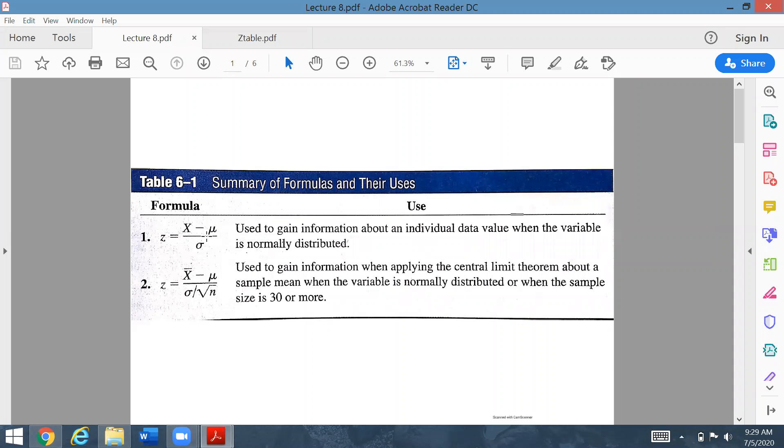The first formula is used for individual data, and this formula is used about a sample mean when the variable is normally distributed or when the sample size is 30 or more. Sample mean will be given to you, mu will be given, sigma will be given, sample size will be given. You just insert these data values in the formula, express your data into a z value, and then look at it from the distribution table.